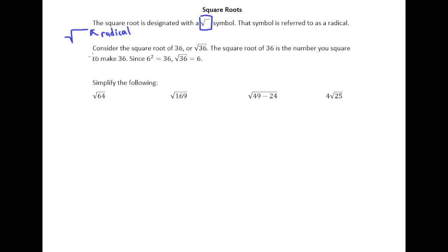So what does it mean to take the square root of a number? Let's use an example. Let's take the square root of 36, which symbolically we would write like this, the square root of 36. So the square root of 36 is the number that you square to make 36. So what number do I square or multiply by itself to make 36? Well the answer would be 6, right? 6 squared equals 36, so therefore the square root of 36 is 6.